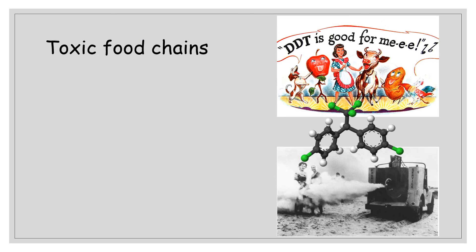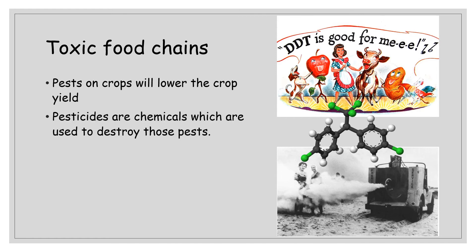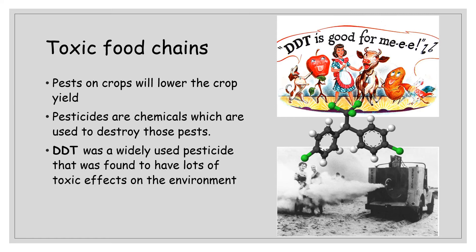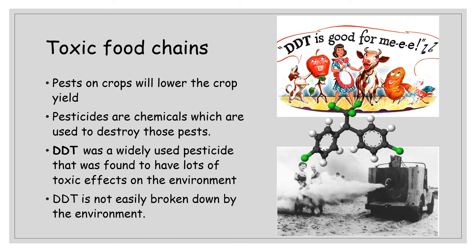Another issue with food production is pests — mainly insects that eat our crops and lower crop yield. We employ pesticides, chemicals used to destroy those pests. DDT was a widely-used pesticide found to have massive toxic effects on the environment. It was widely used in the 1950s and 60s — sprayed on streets, from airplanes, in classrooms, and on people's clothes — because people thought it was so effective at killing bugs both on crops and in daily life.